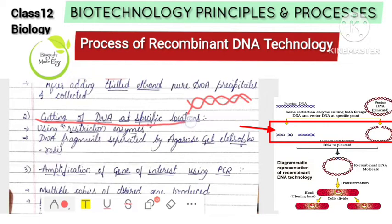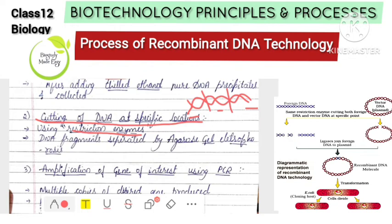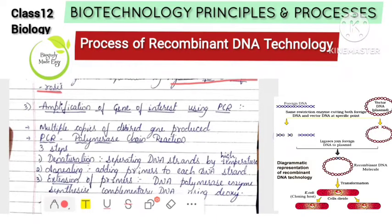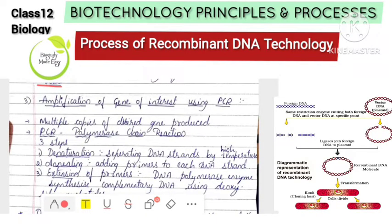The second step is cutting DNA using restriction endonucleases. The restriction enzyme cuts the DNA at specific locations, producing DNA fragments. We separate the desired fragment from other genetic material.